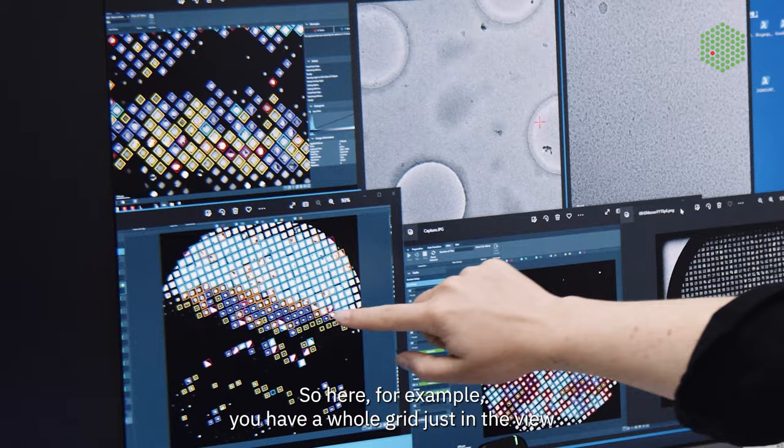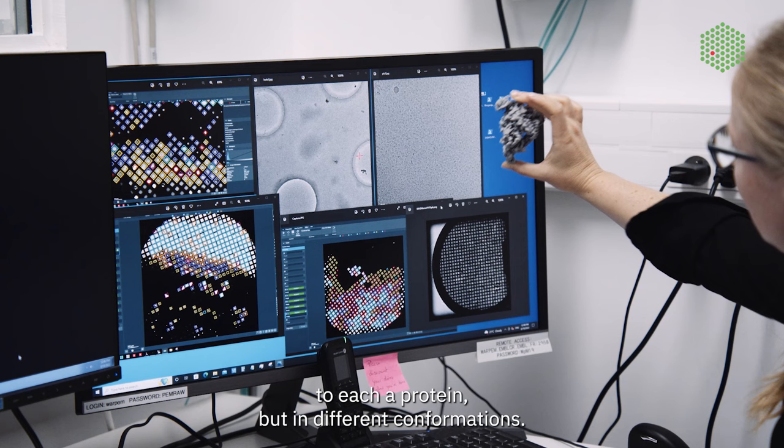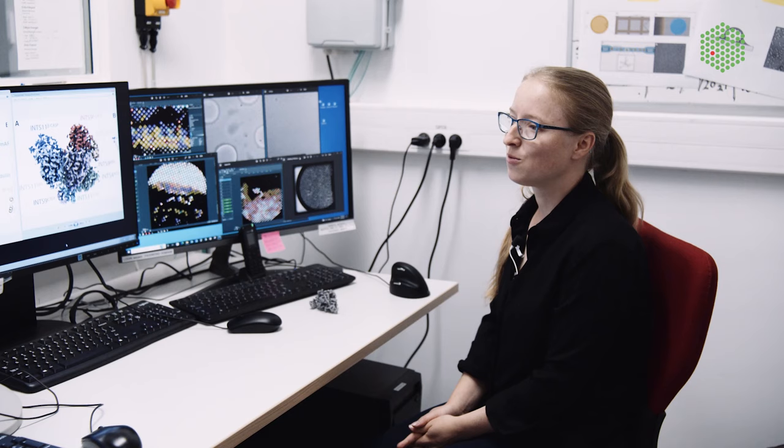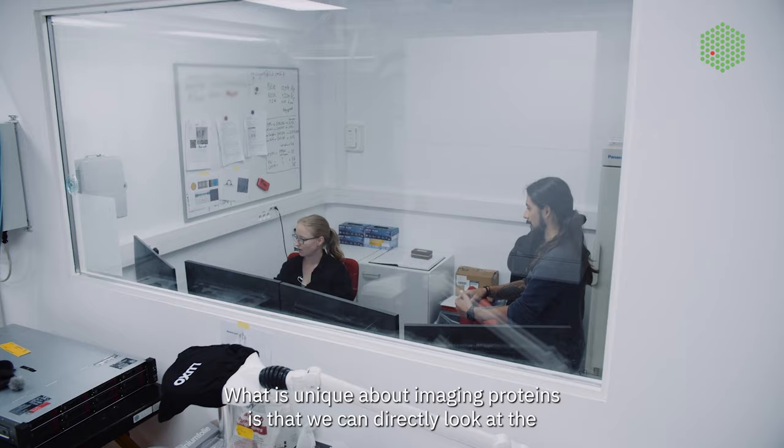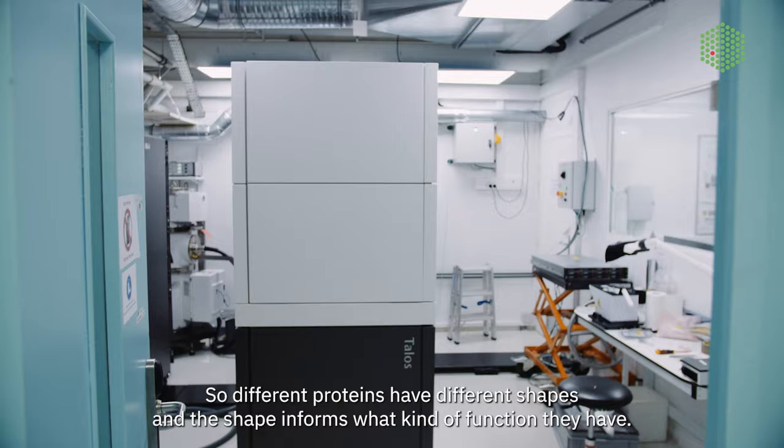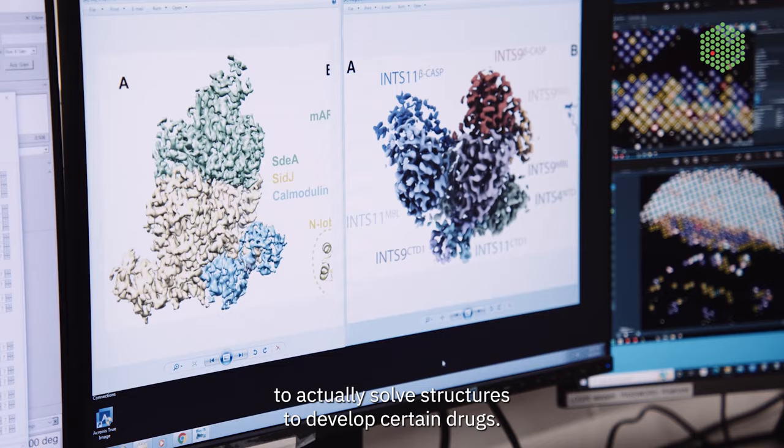These samples that Victor prepares are here. So here, for example, you have a whole grid just in the view that you would see in the microscope. And these dots that you probably can barely see correspond to each protein, but in different conformations. And this is how we can solve it in three dimensions. What is unique about imaging proteins is that we can directly look at the structure of the protein. So different proteins have different shapes, and the shape informs what kind of function they have. Cryo-EM is useful, for example, for the spike protein of the coronavirus. And in general, Cryo-EM is more and more used in industry to actually solve structures to develop certain drugs.